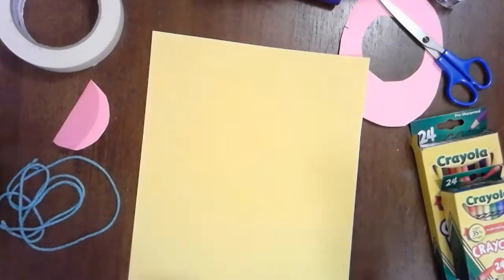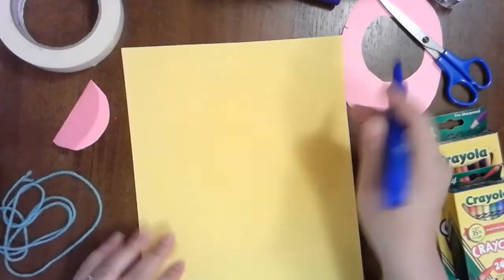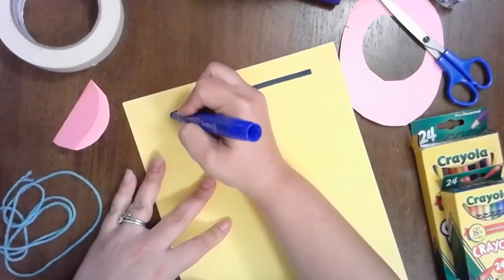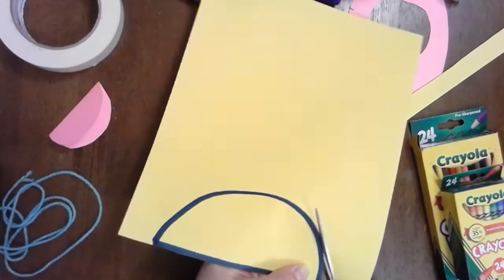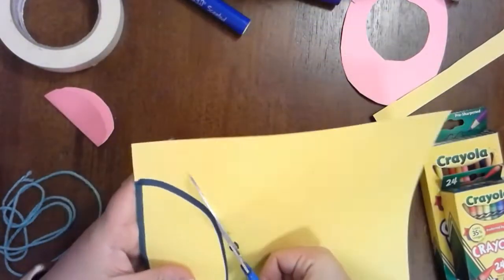With a different colored paper, I am going to make another shape. This time I'm going to make a half circle. Again, remember to make your shapes big. Just like your other circle, you're going to cut this shape out.